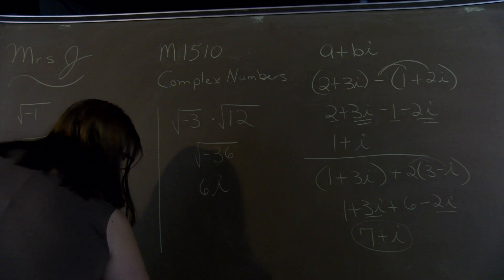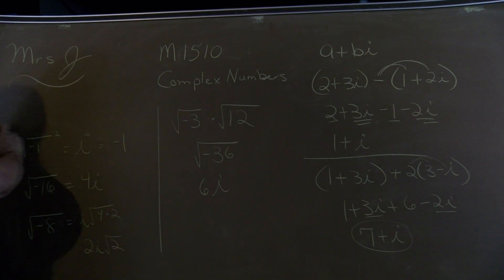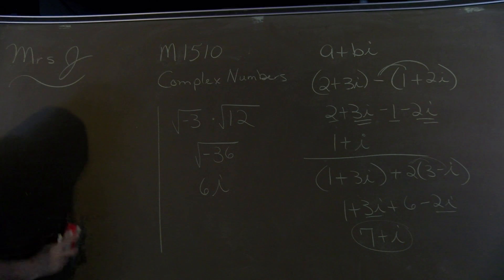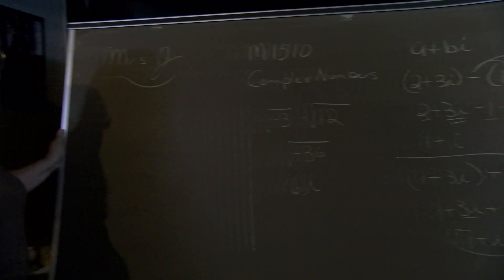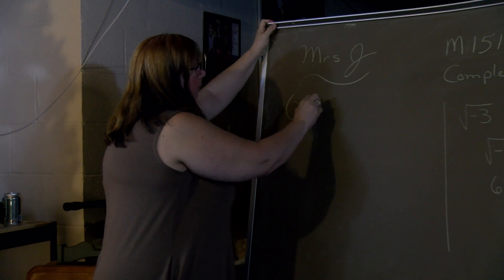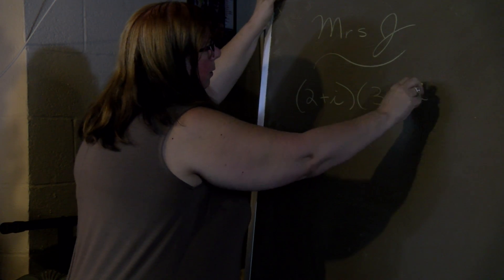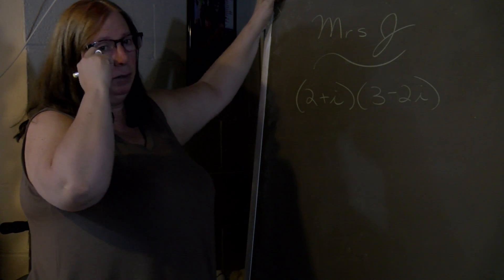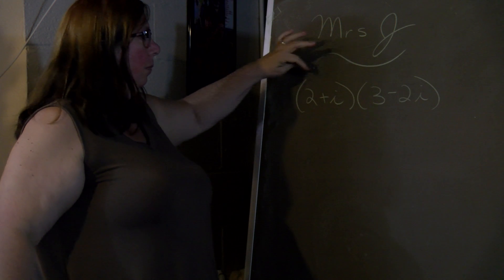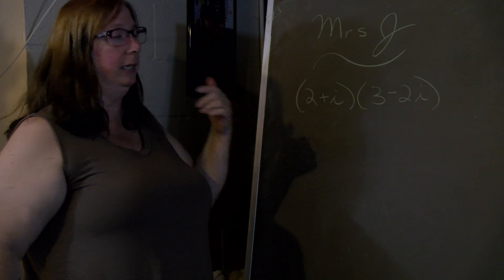So adding and subtracting, you just combine. Multiplying. You need to be careful. Because you'll end up with the i squared and remember, i squared is negative 1.